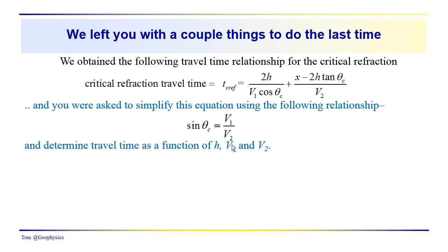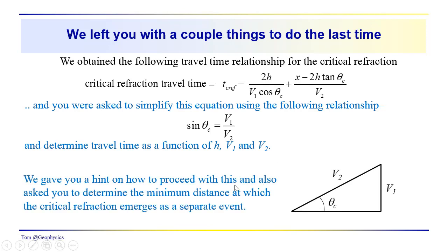We said to use Snell's law in this form for the critical angle, where sine of theta critical is equal to v1 over v2, and then determine travel time as a function of h, v1, and v2 — in other words, remove the trigonometric functions. As a hint, Snell's law in this form indicates that the side opposite is proportional to v1, the hypotenuse to v2, so the adjacent side would be the square root of v2 squared minus v1 squared.